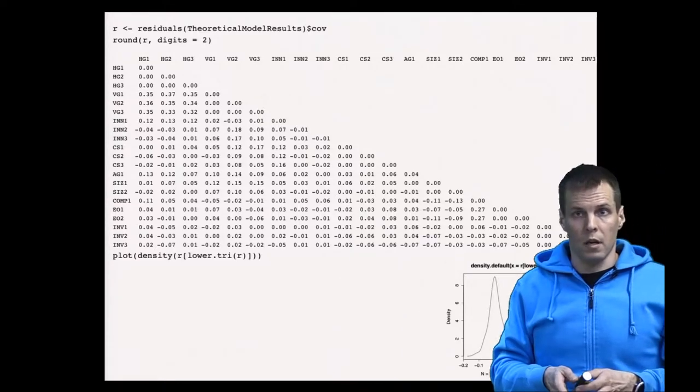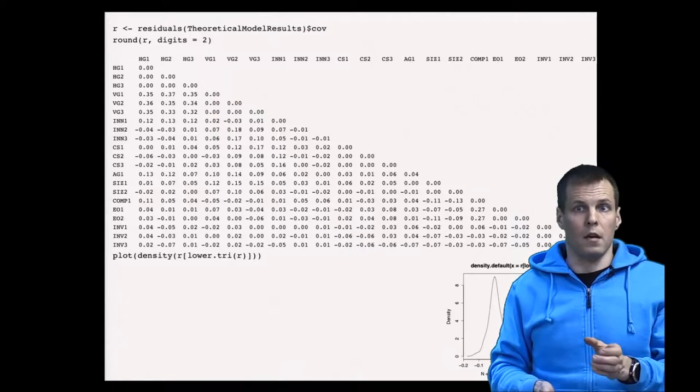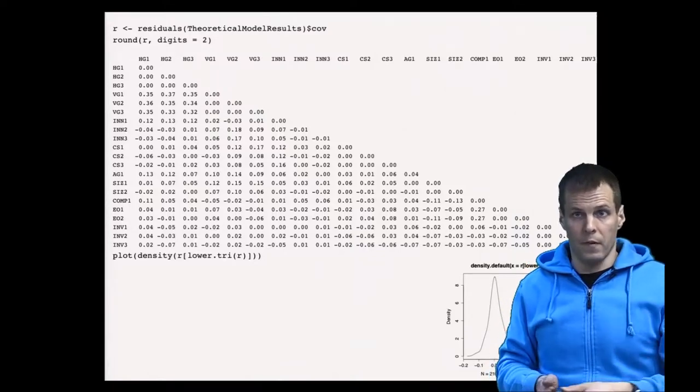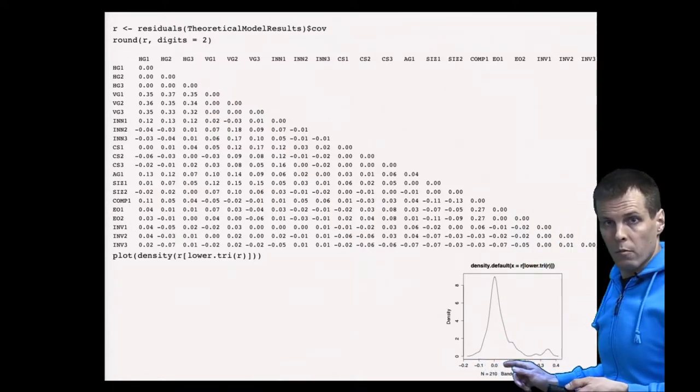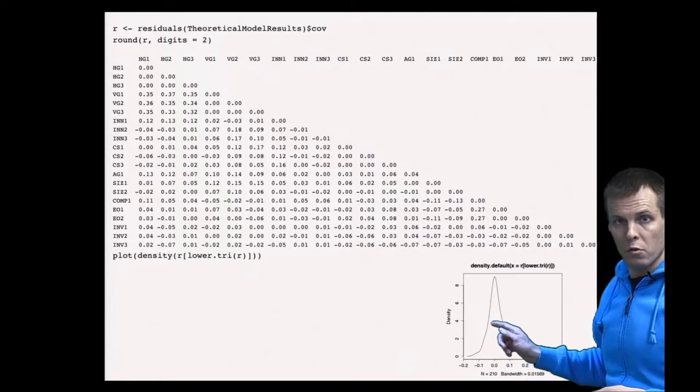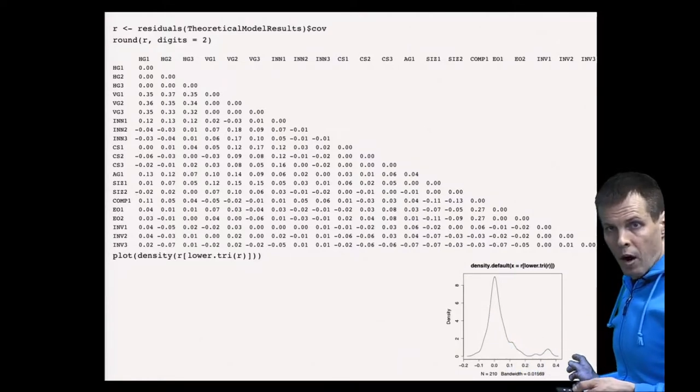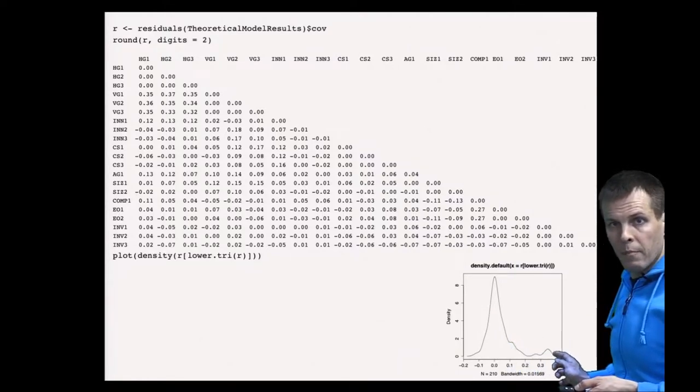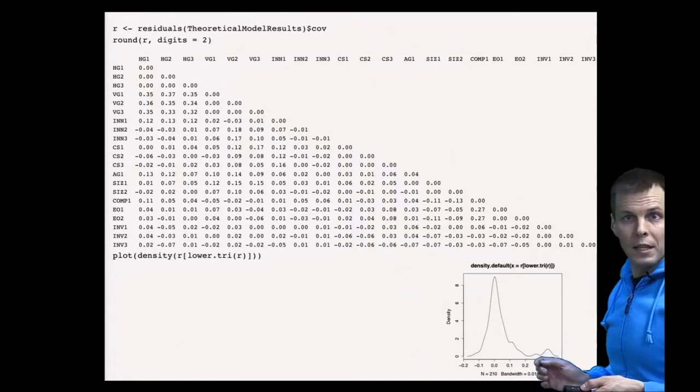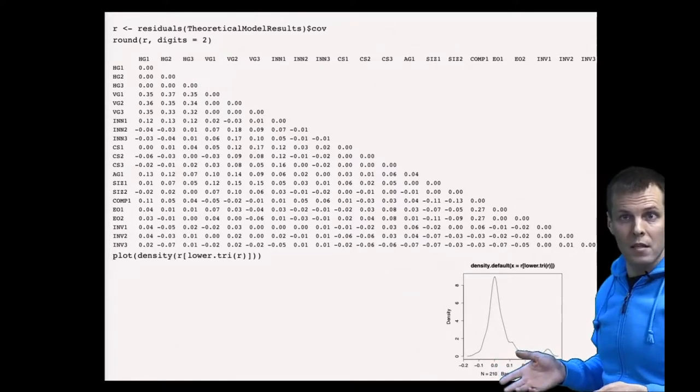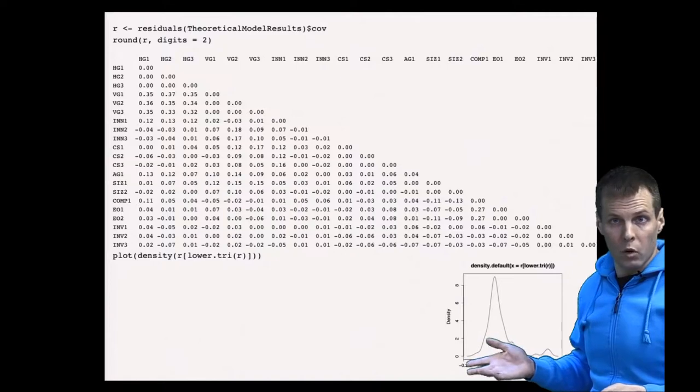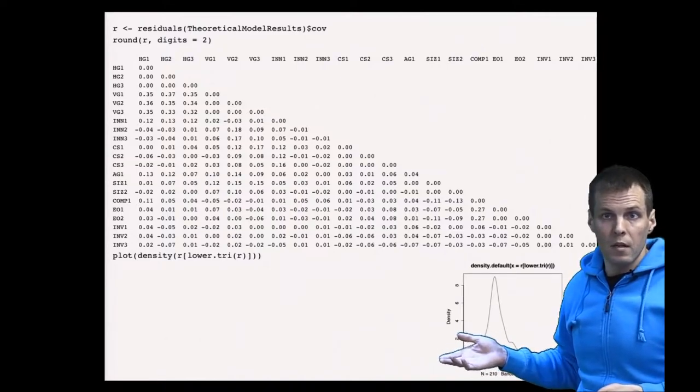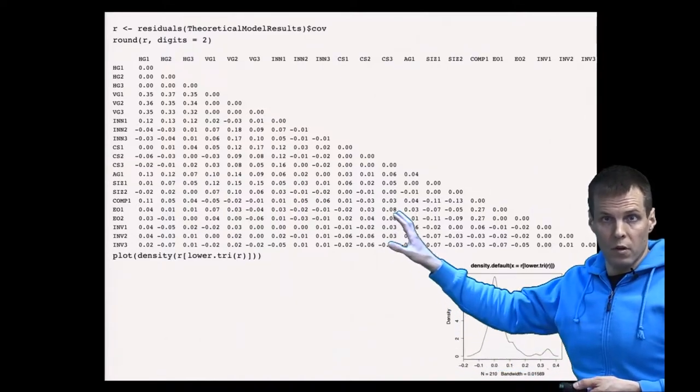This tail also indicates, because there's a bump, that there's local misspecification. So there is some part of the model that is incorrectly specified. It's mostly okay, so most of these correlations are close to zero, but there are some parts where the model doesn't reproduce the data.